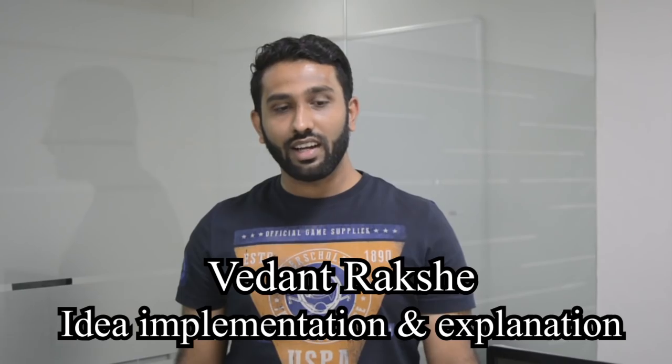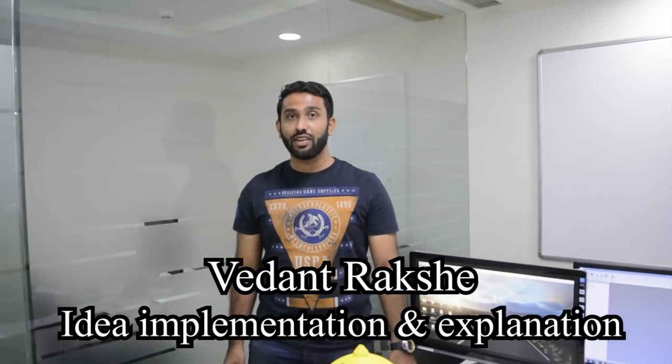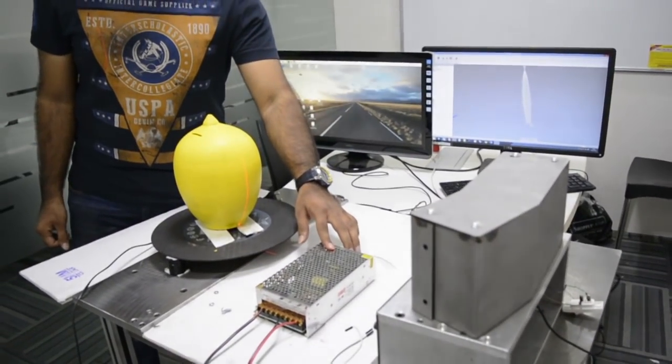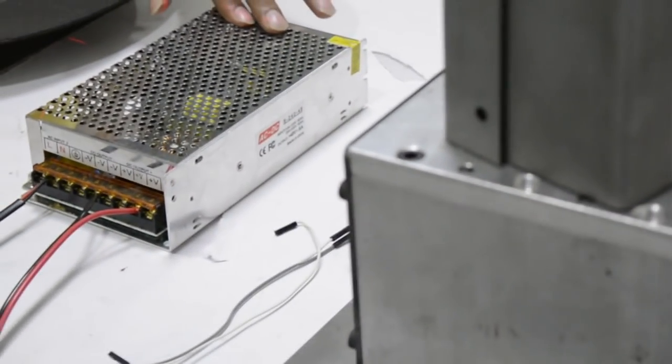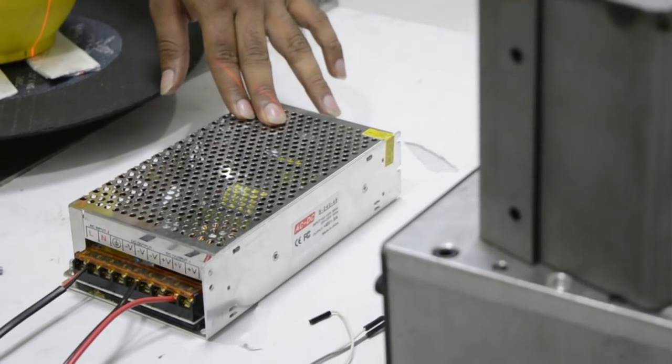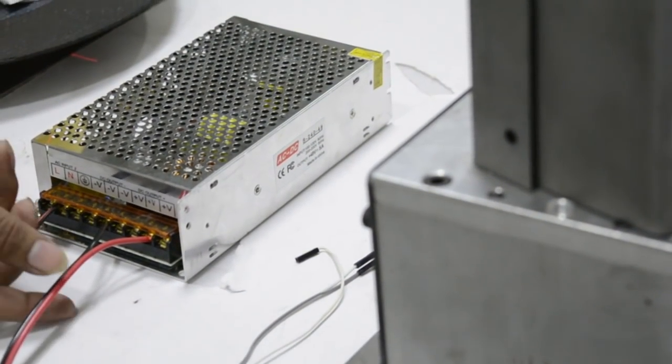Hi everyone, my name is Vedant Rakshay and I am going to explain the components which we have used on our project. I am going to start with the SMPS. This is the SMPS and the specification for this SMPS are: the input required is 240 volt AC and the output is 48 volt DC.